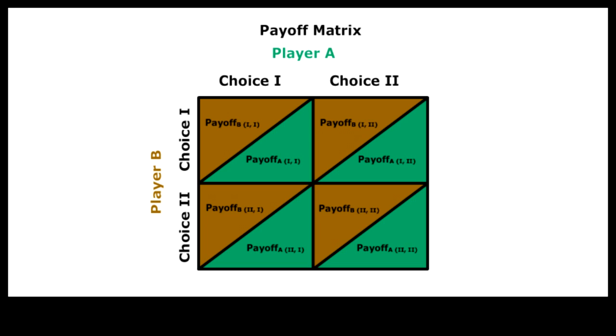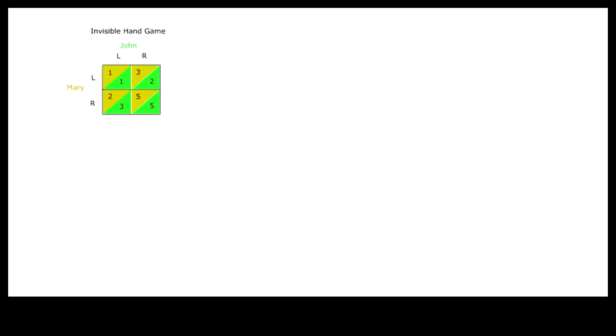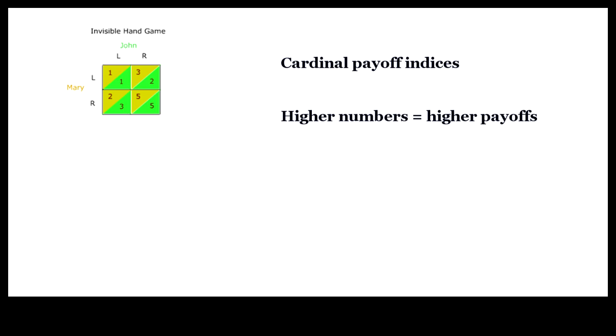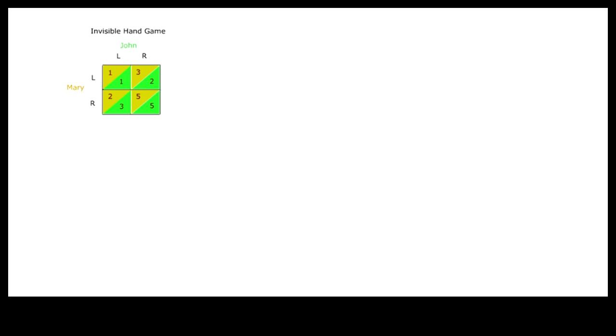In the invisible hand situation, where group interest and self-interest are compatible, the matrix might look like this. There are two individuals, John and Mary, and two options: the right choice, R, and the left choice, L. The payoffs of John's choices are colored green, and the payoffs of Mary's choices are colored differently. The numbers are a cardinal index of possible payoffs. There are four possible combinations of choices.